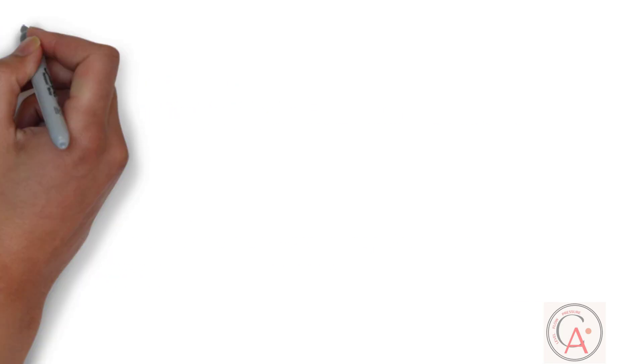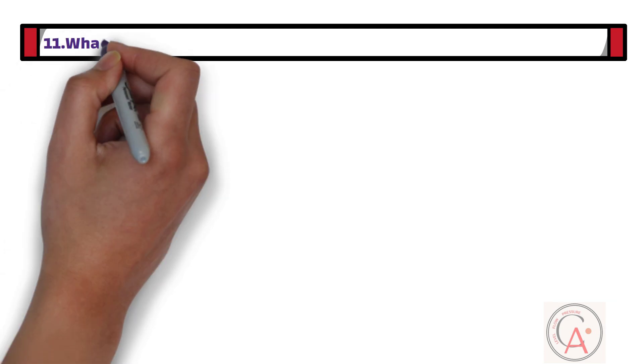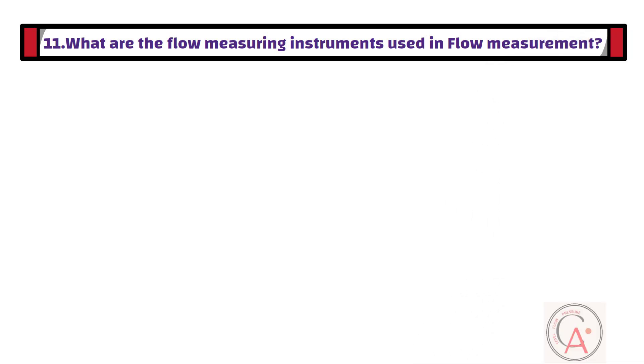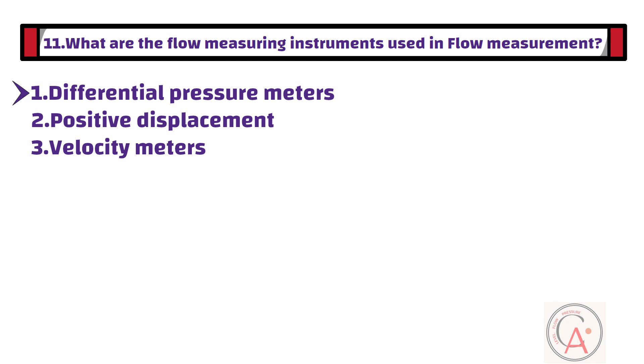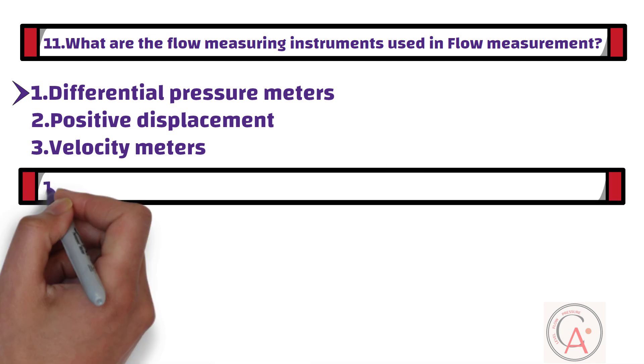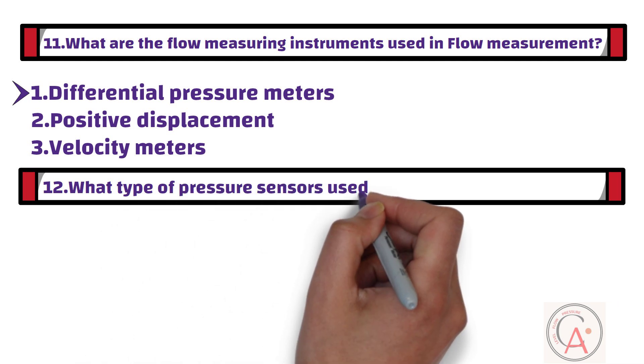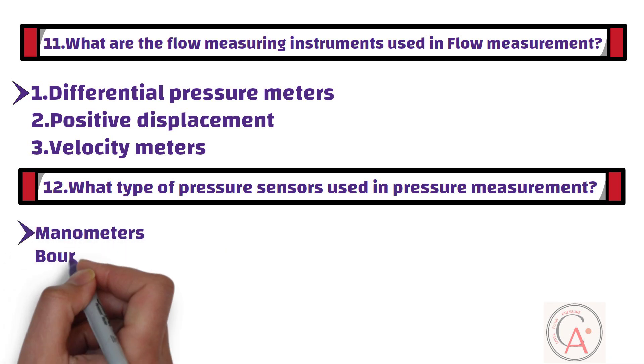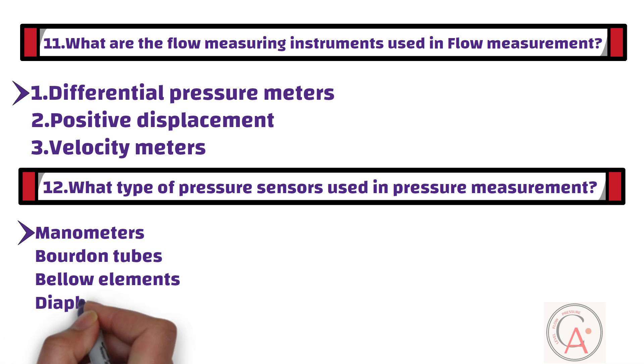The eleventh question is, what are the flow-measuring instruments used in flow measurement? There are different types of flow-measuring instruments such as differential pressure meters, positive displacement meters, velocity meters, thermal mass flow meters, and Coriolis mass flow meters. The twelfth question is, what type of pressure sensors are used in pressure measurement? There are different types of pressure sensors such as manometers, Bourdon tubes, bellow elements, diaphragm elements, and DP transmitters.